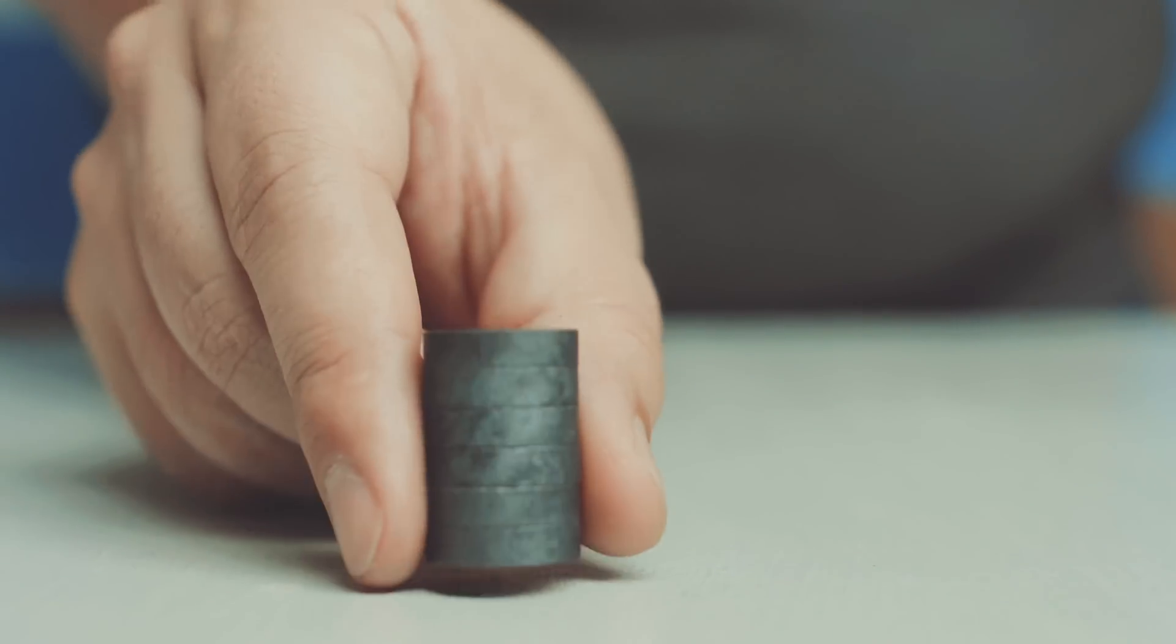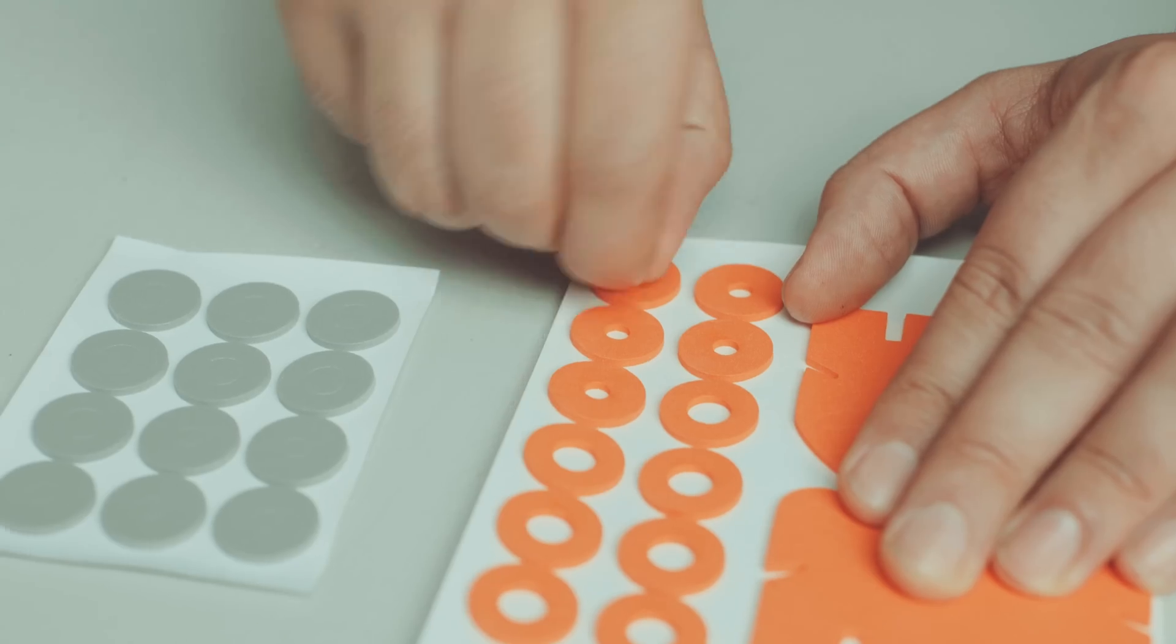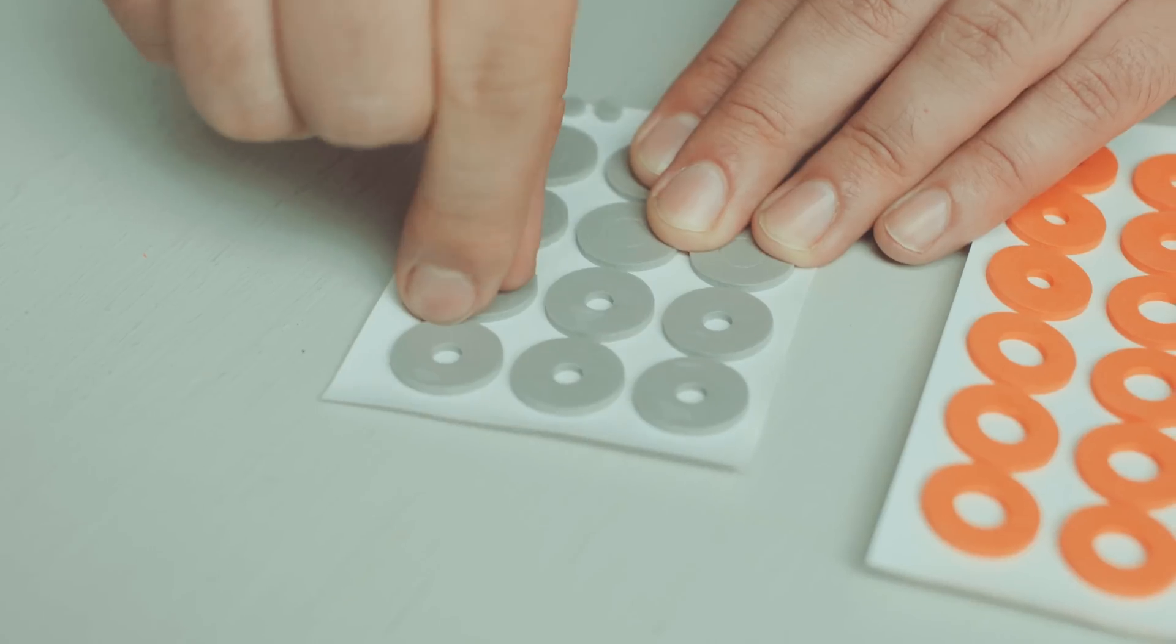First, get your magnets. You'll need six of them for this project. Pop the circles out of all of your sticky foam rings.